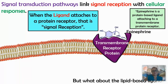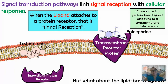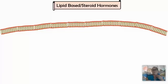Let's briefly discuss lipid-based or steroid hormones before spending the rest of the video on protein-based hormones. Lipid-based or steroid hormones have receptors within the cell — an intracellular protein receptor. Testosterone, for example, can cross right through the lipid bilayer. When we talk about the cell responses of lipid-based or steroid hormones, most of the time it occurs within the nucleus.